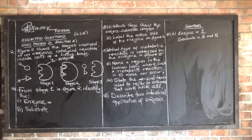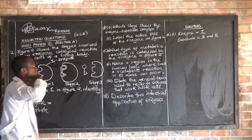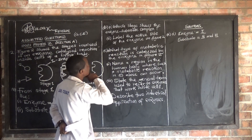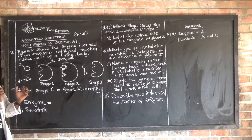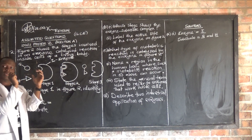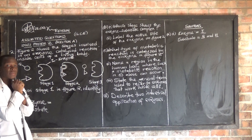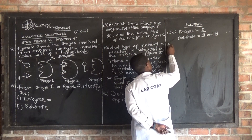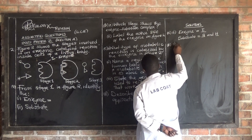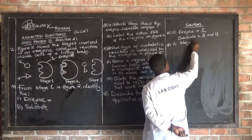So this is our enzyme and this is our substrate. Now looking at part B, Roman numeral one: which stage shows the enzyme-substrate complex? The enzyme-substrate complex is a compound formed by the enzyme and the substrate binding together. The enzyme-substrate complex is represented by stage 2. So the answer for this question is stage 2.